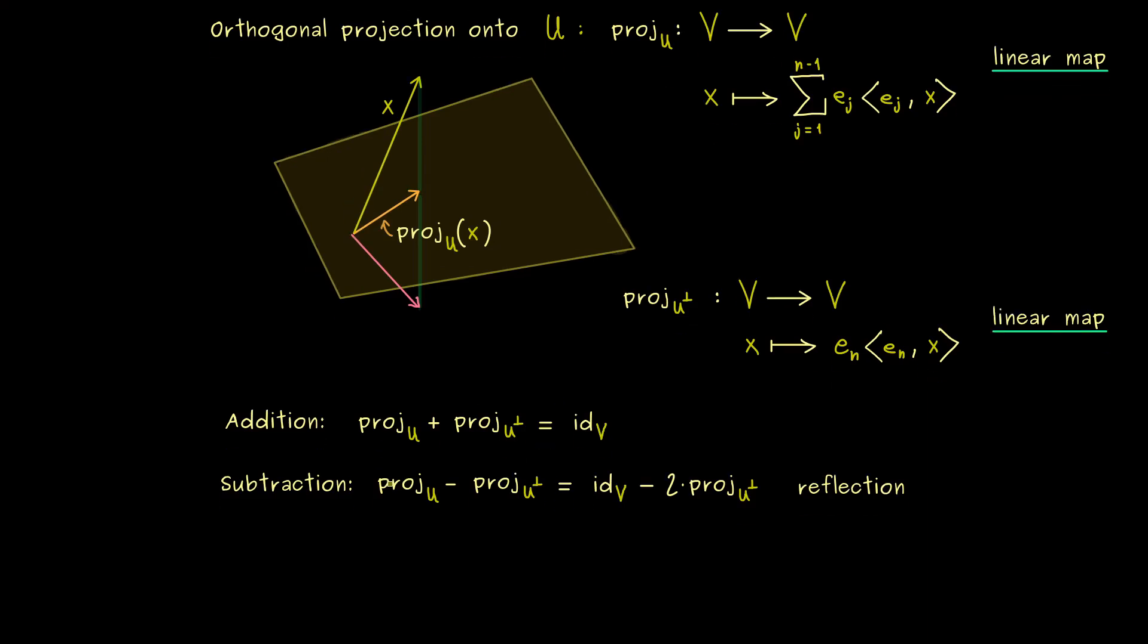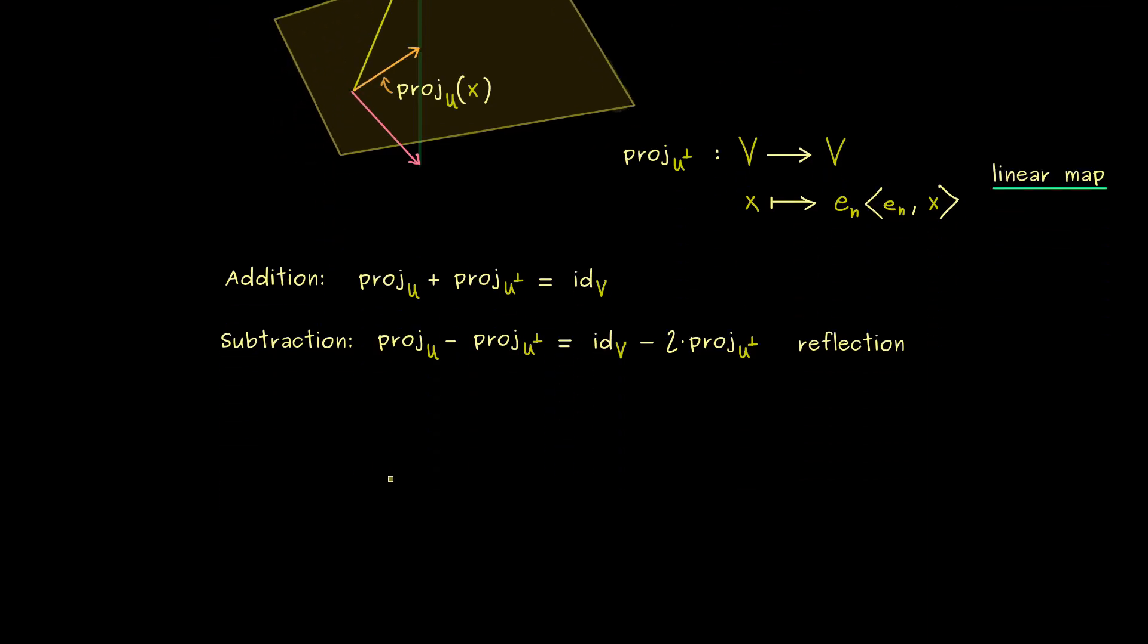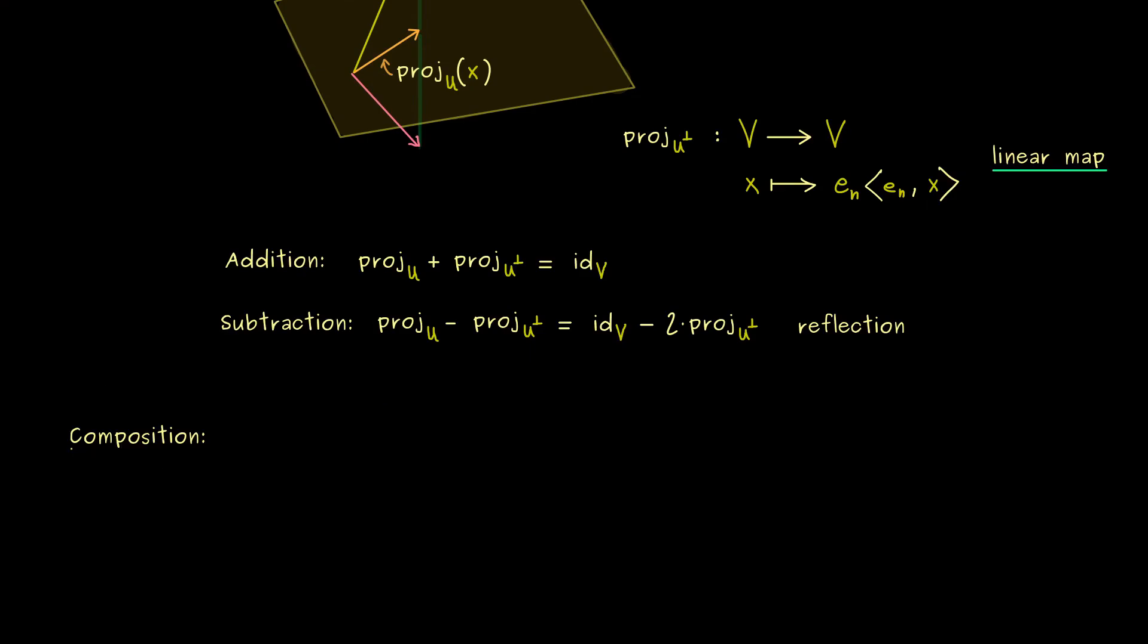And now I would say let's end this video by quickly talking about the composition. So you know you can always build a composition of two functions if the domains and codomains fit together. So here we could say we have a vector space U, a vector space V, and a vector space W. And now between U and V, we have a linear map k, and between V and W, we have a linear map l. And now the result is that the composition l after k is also a linear map. So this is important to remember and easy to show.